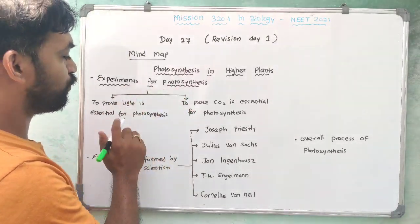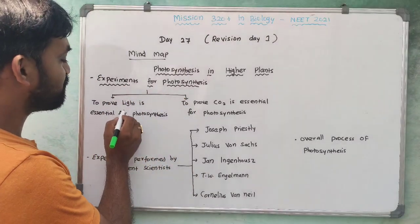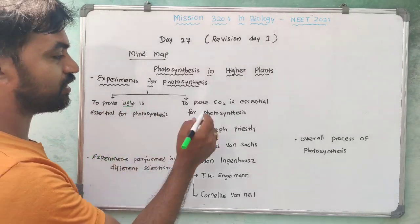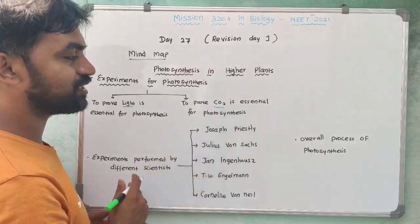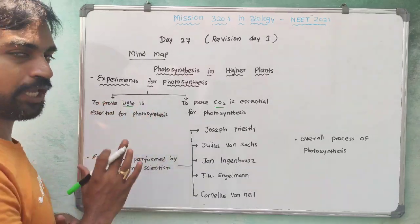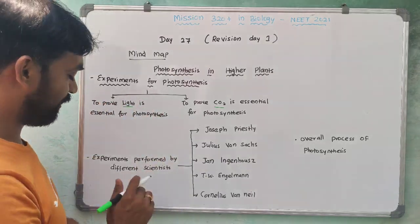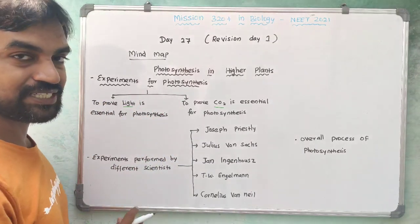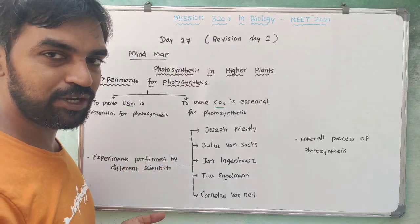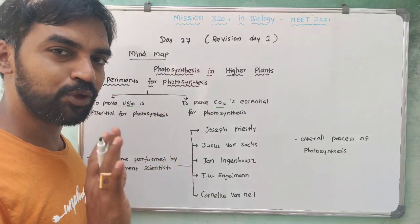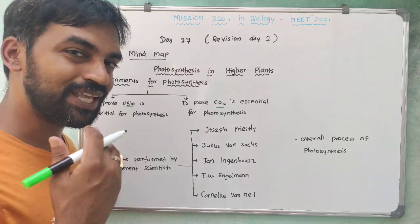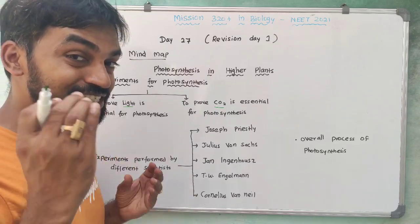So, experiments for photosynthesis: light is essential for photosynthesis, and carbon dioxide is essential for photosynthesis — two types. And then, experiments performed by different scientists. Five scientists are going to be covered here, and we will go through the book line by line to set up the mind map.